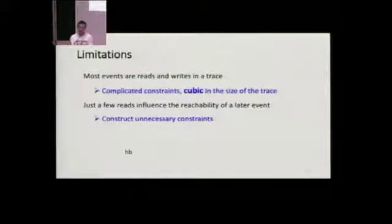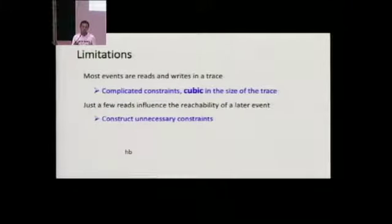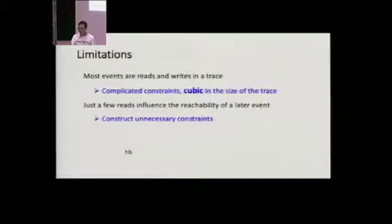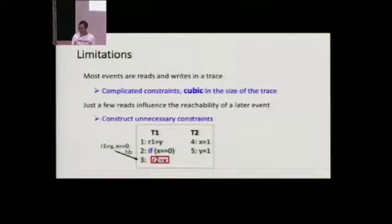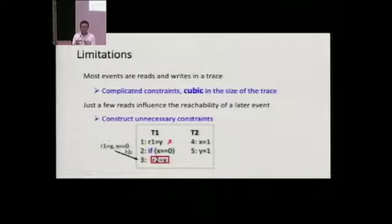The validity constraint is important but has some limitations. For most events in the trace are reads and writes, the constraints become very complicated as the trace gets longer. More specifically, the number of constraints will be cubic in the size of the trace. The second limitation is that although there are lots of reads in the trace, just a few of them can influence the reachability of an event. So MCR constructs some unnecessary constraints. For example, if we consider the reachability of event R2 equals to X, MCR enforces both reads that happen before to return the same value, but the first read doesn't influence the reachability at all. In this work, we focus on how to use static dependency analysis to reduce the size of the validity constraints.